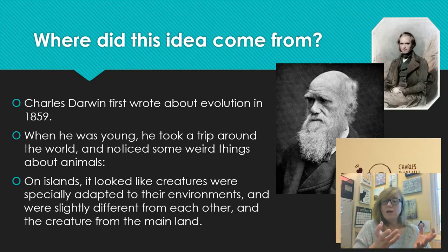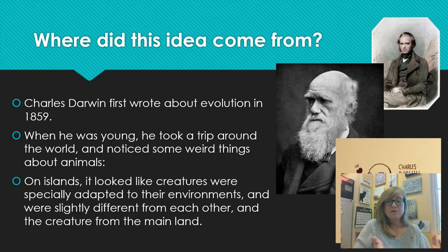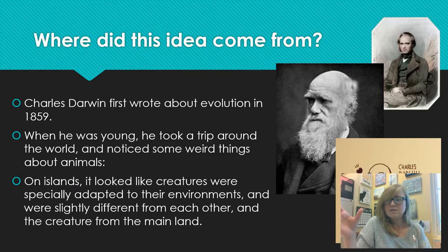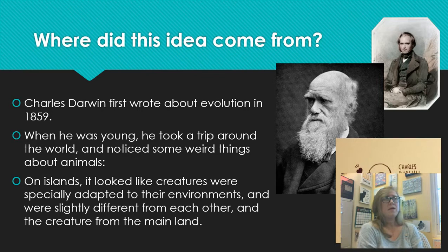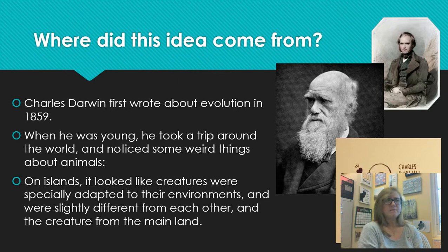Nobody knew the mechanism that caused things to change over time — you can't get order from chaos, like you can't smash a cup into pieces and end up with a cup again. That's one of the laws of the universe. People saw that creatures are born with random differences, but how are they so well suited to their environments? It can't just be randomness. Wallace and Darwin both came up with the mechanism around the same time.